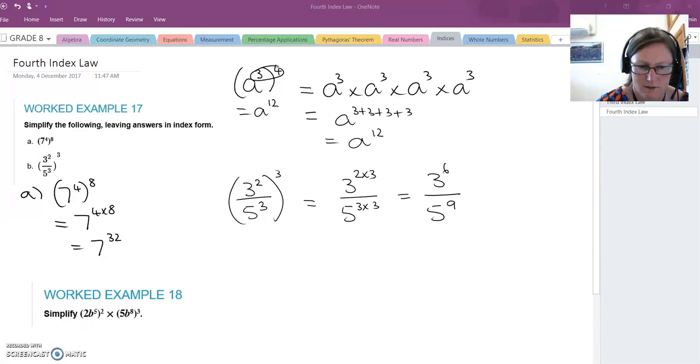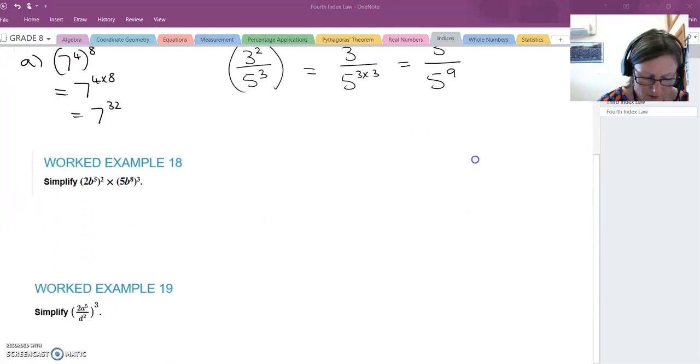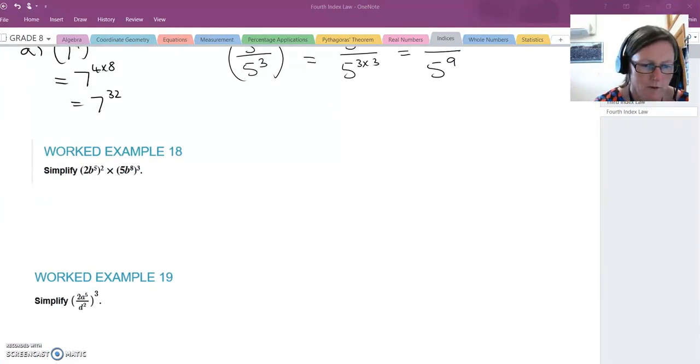So that's our fourth index law. If we just move on and look at one further point. This further point involves these coefficients here. What we need to do is also remember to raise them to the power. So what I do is put a 1 there, put a 1 with them.